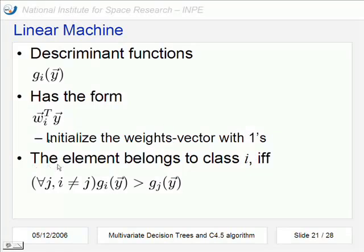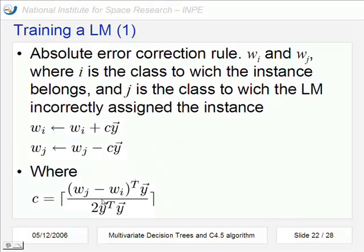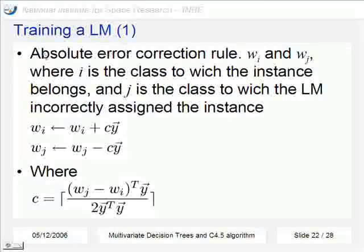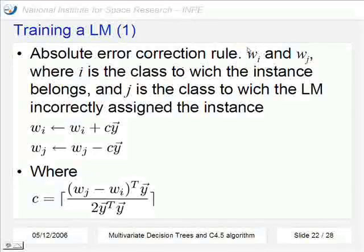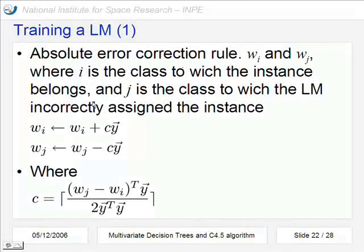And to say that some element belongs to class i, we can say that for all other discriminant functions, this function is higher than all of them. To train a linear machine, we use the absolute correction rule as one approach. We use these two weights where i is the class to which the instance really belongs and j is the class to which the linear machine made an incorrect classification.